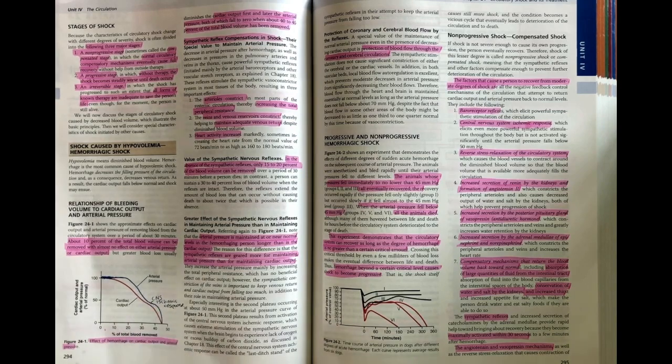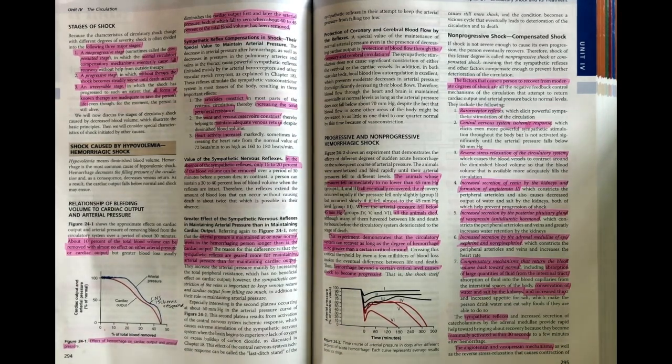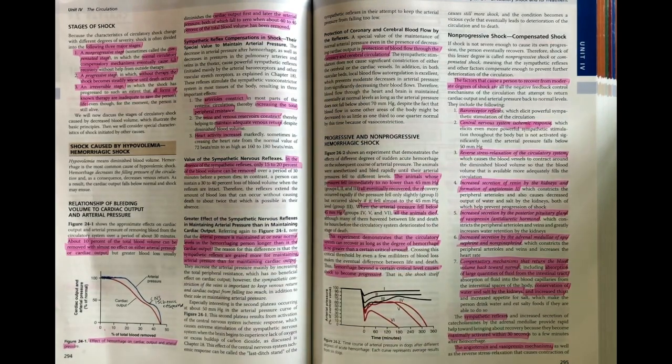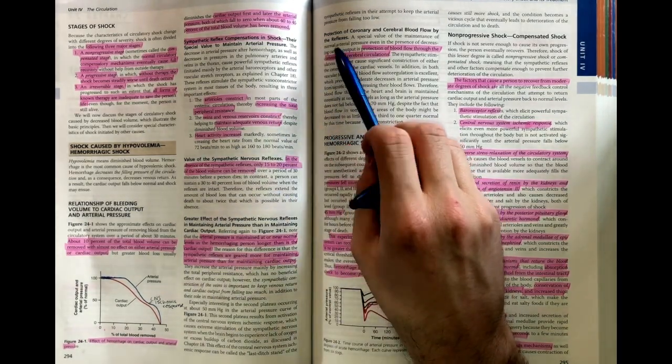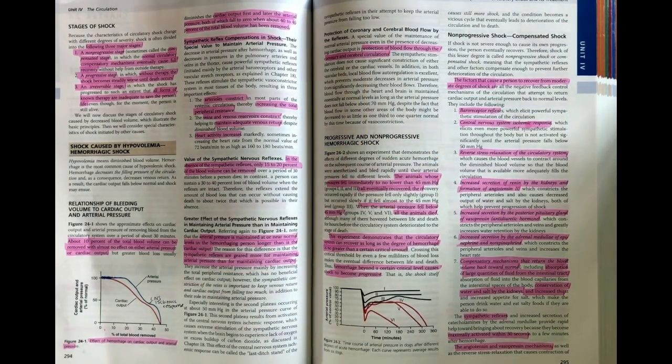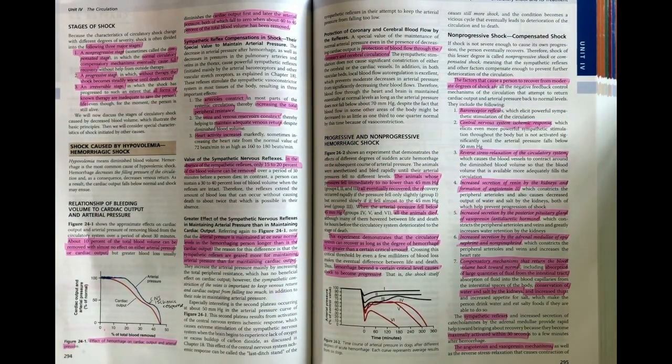As all this is occurring, the blood pressure is trying to be maintained to really maintain coronary and cerebral circulations. Those are the big key two because we want the heart to maintain its normal perfusion and the brain to have enough oxygen, otherwise we end up with permanent brain damage.